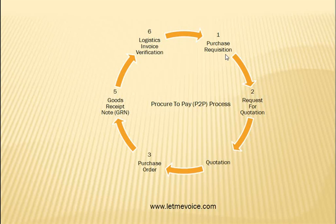We can raise a PR for the following procurement types: first is Standard, second is Subcontracting, third is Consignment, fourth is Stock Transfer, and fifth is External Services.